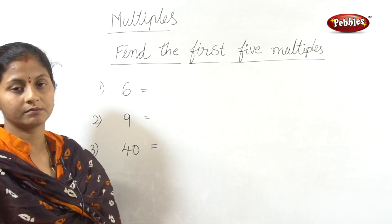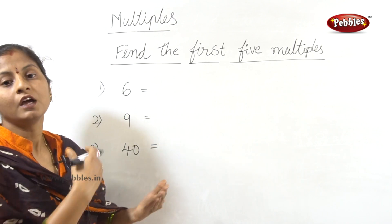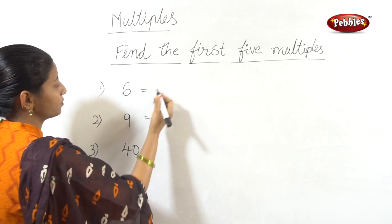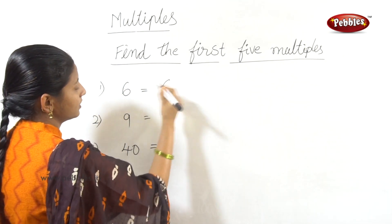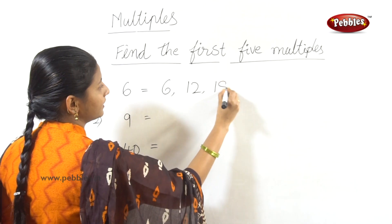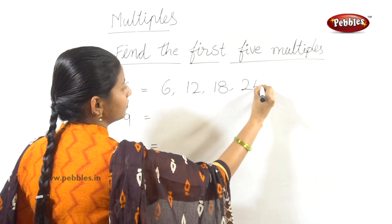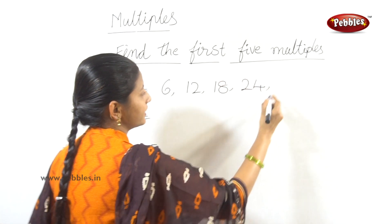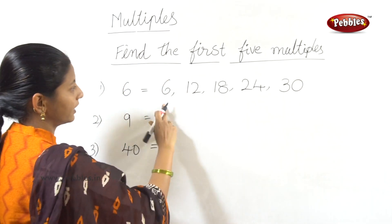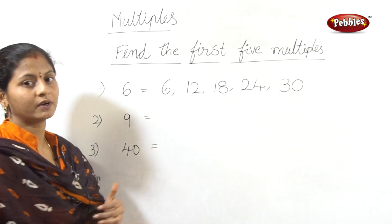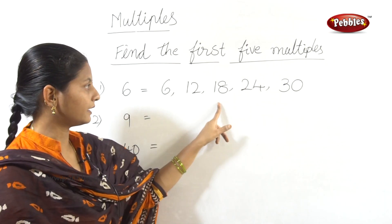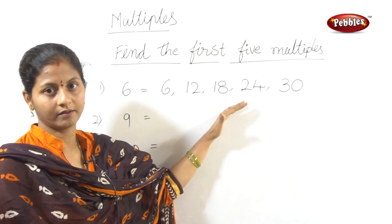First 5 multiples of 6: 6 ones are 6, 6 twos are 12, 6 threes are 18, 6 fours are 24, 6 fives are 30. First 5 multiples of 6 are 6, 12, 18, 24, 30.